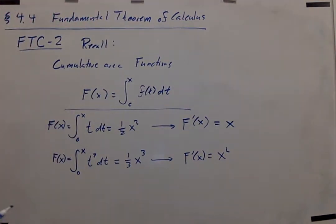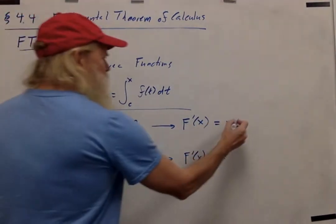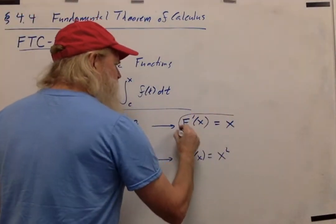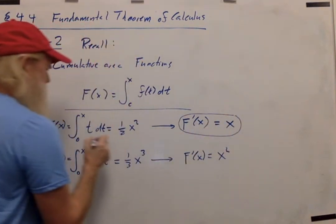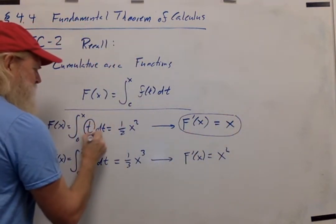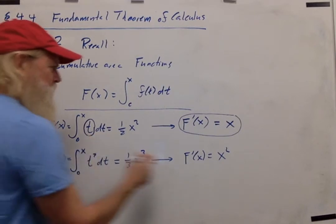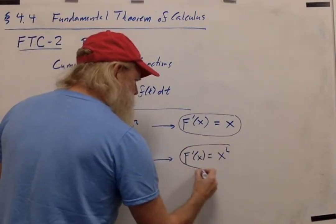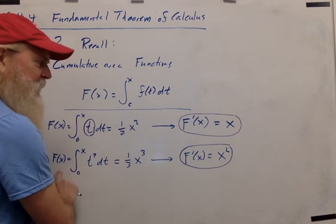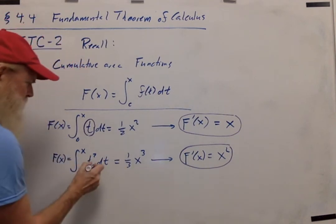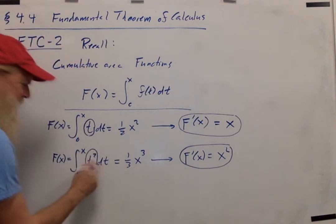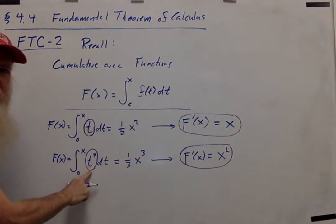Look at the relationship here. The derivative of big F(x) is the same as the integrand, just with a t replaced with an x. Here, the derivative of this cumulative area function is the same as the integrand t squared, just with the t replaced with x.